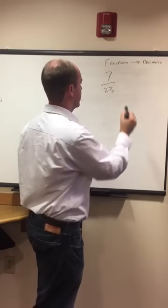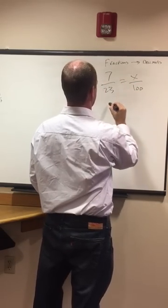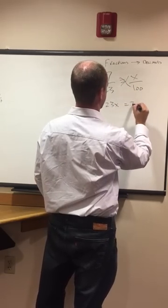If you don't have that, you have to solve 7 out of 23. Set up an equation, equals x out of 100. 23x, we're going to cross multiply these guys, 23x equals 700.